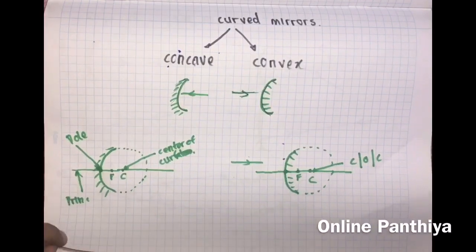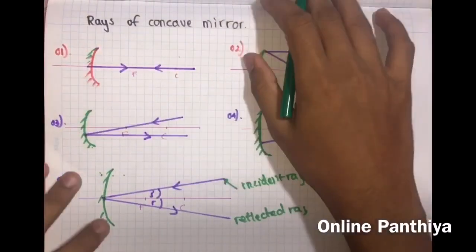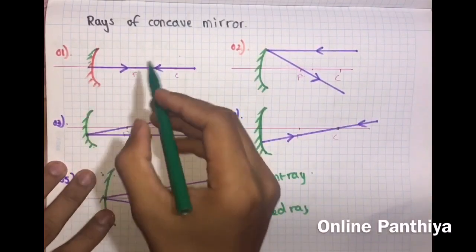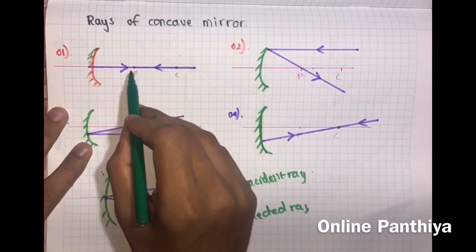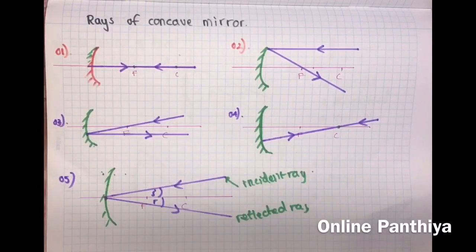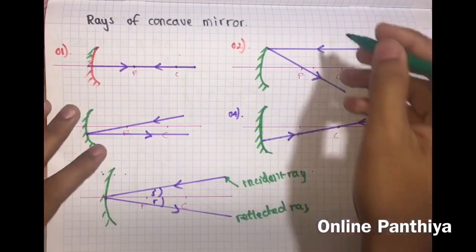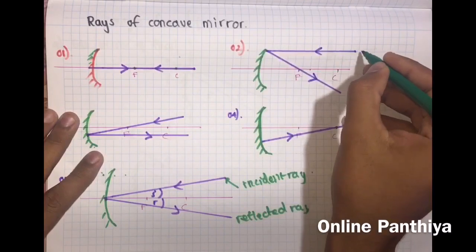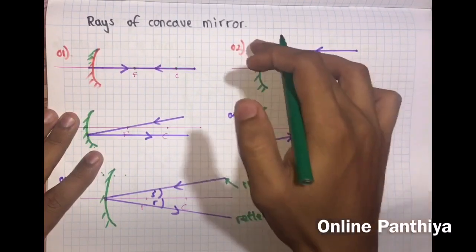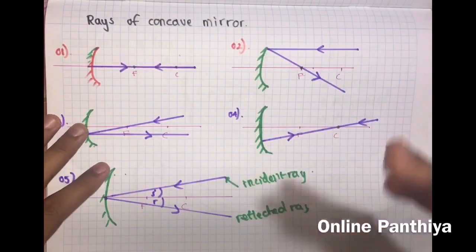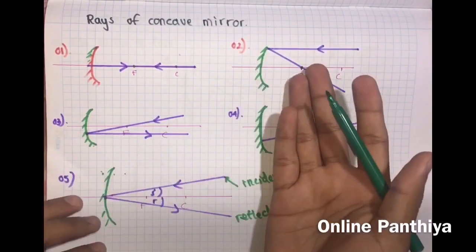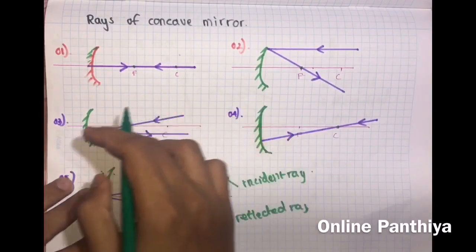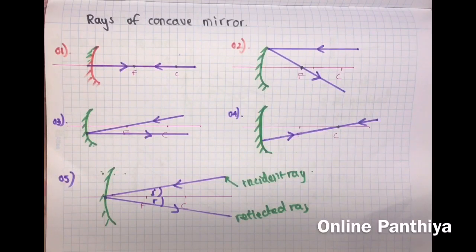Now let us look at the types of rays for a concave mirror. The ray coming through the principal axis will go through the same axis. The second type: a ray coming parallel to the principal axis will go through F — that is how F is defined. The third type is just the opposite: a ray coming through F will travel parallel to the principal axis after reflection.